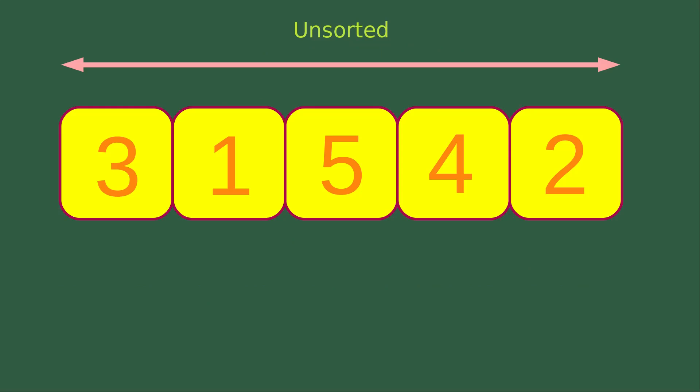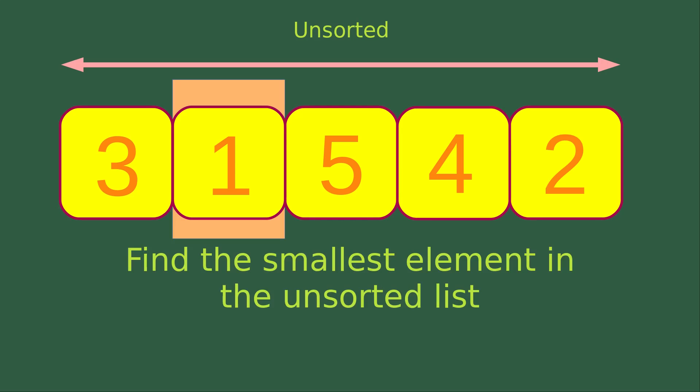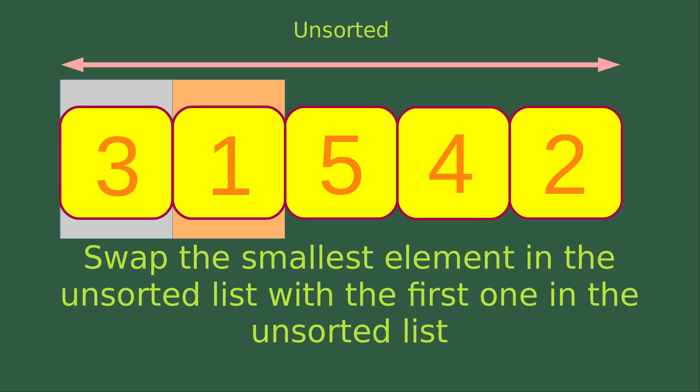Let us see an example. Suppose I have these five numbers being unsorted. Now I would like to see whether some kind of swapping is needed. I would like to find out the smallest element in the unsorted list. For this particular unsorted list, the element with number one is the smallest one. And I'm going to swap number one with the first element in the unsorted list, which is equal to three.